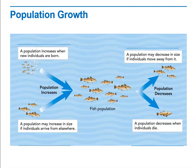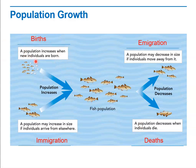There are four factors that affect population growth: birth rate, death rate, immigration, and emigration. Birth rate is the rate at which new individuals are born — more births may result in population increase. Another way population can increase is through immigration, where individuals come into the population from another area. Emigration, on the other hand, is where members of the population leave and move to a different area, causing the population to decrease.